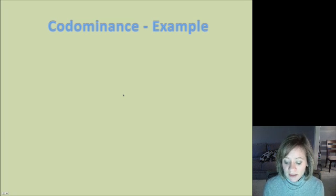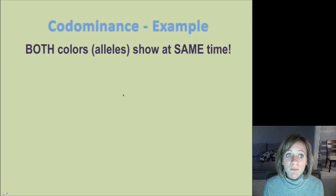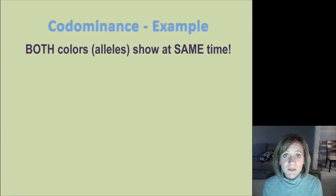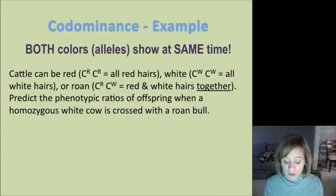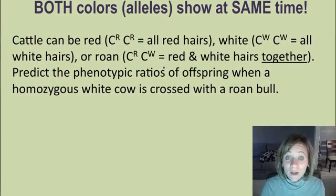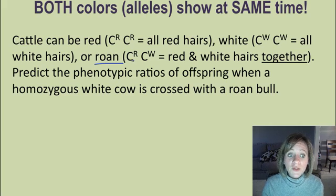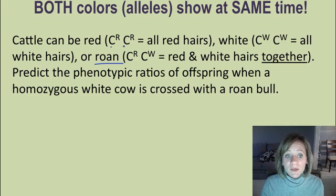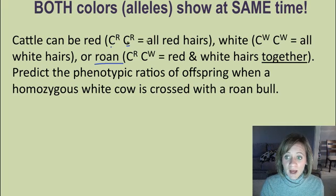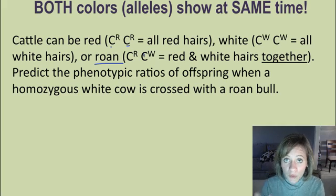The third level is codominance. Remember, both colors are showing at the same time — both red and white. Here's the classic example: cattle and the roan color, where you see both red and white hairs together on the cow. With codominance, we use the notation big C with a superscript for the color. So they can be red (C^R C^R), white (C^W C^W), or roan (C^R C^W), where the heterozygote shows both colors.